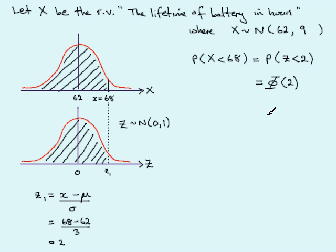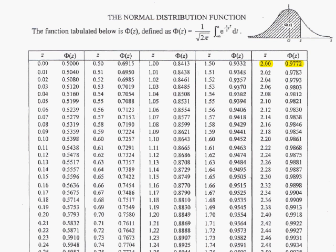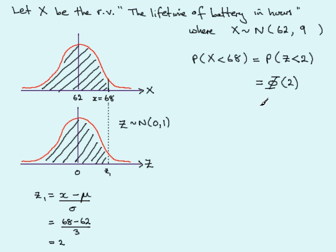So we turn to our tables for the cumulative distribution function for Z. We have a Z value of 2, that represents two standard deviations above the mean, and phi of 2 gives us the probability of being less than or equal to two standard deviations above the mean, that is this shaded area. So phi of 2 is 0.9772. From the tables then, we see that phi of 2 equals 0.9772.